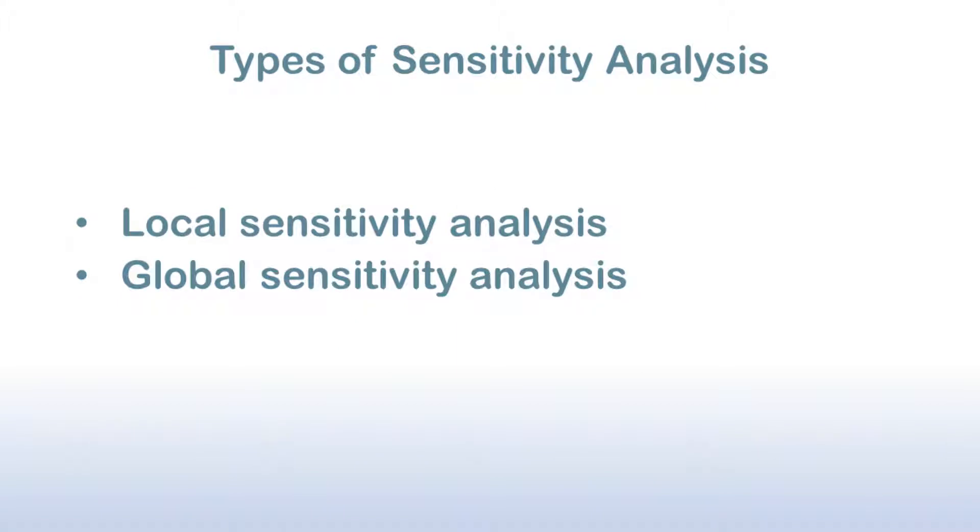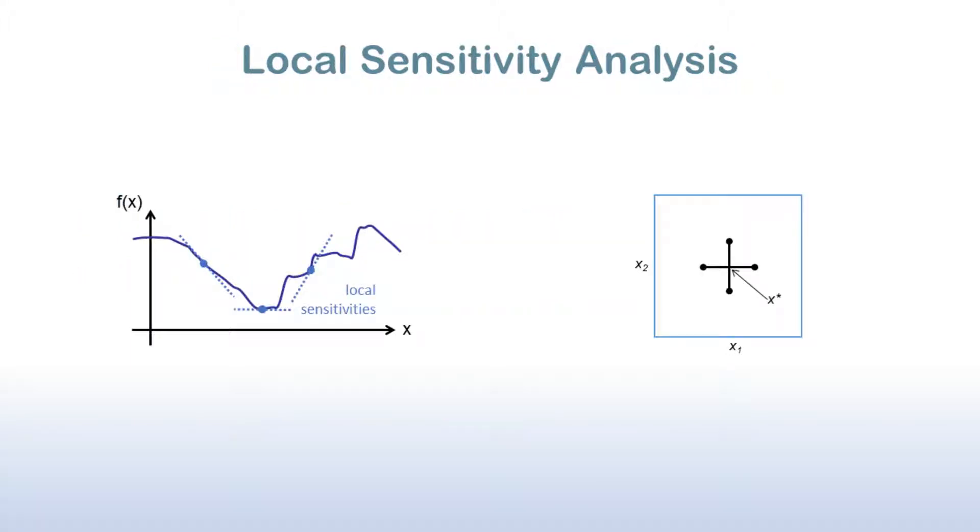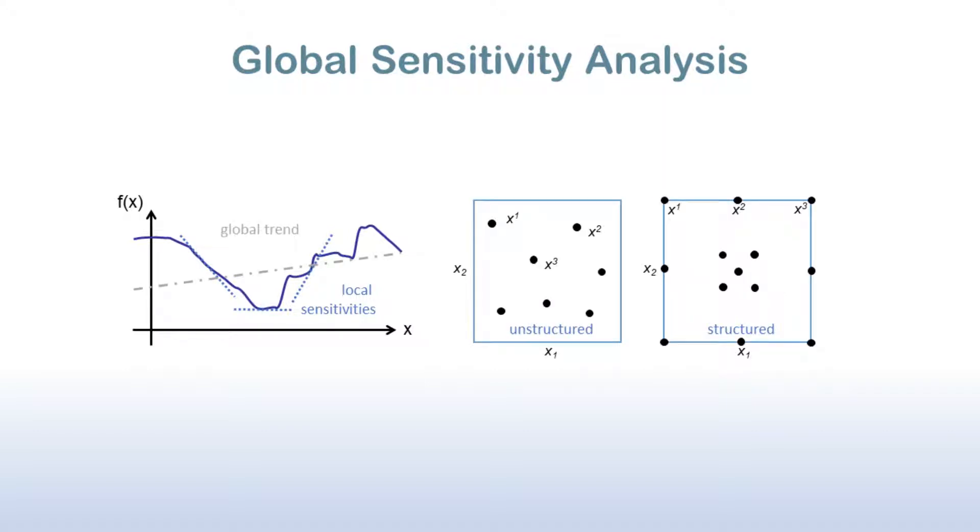There are two types of sensitivity analysis in Dakota: local sensitivity analysis and global sensitivity analysis. Local sensitivity measures the relative influence of variables at a particular point in the input domain using partial derivatives. Global sensitivity analysis, on the other hand, assesses the influence of the parameters over the entire input space.